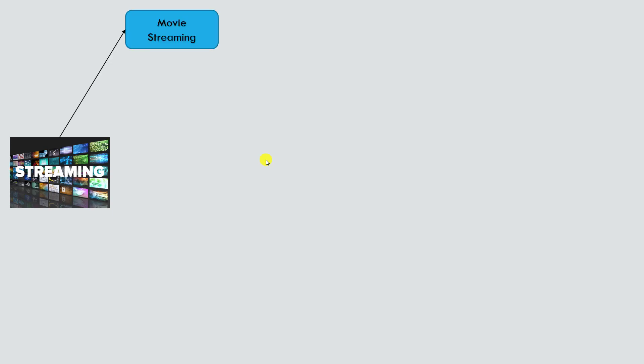When we talk about a streaming platform, there could be a lot of business services it provides — mainly video streaming or movie streaming. Apart from that, they could have movie onboarding as well. Whenever a new movie comes up, they generally do a lot of conversion to different formats like 1080p or 720p. We can create a service called the movie streaming service to monitor what's going on there.